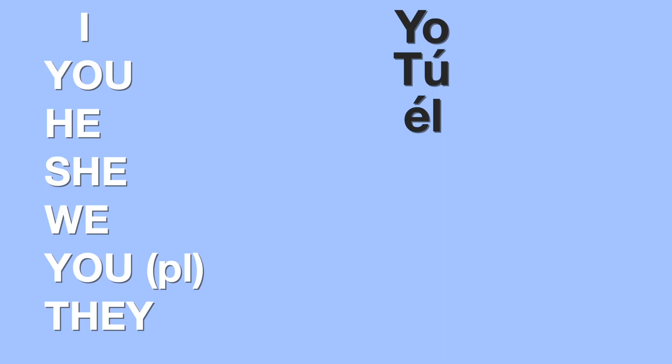In the previous video, we learned about the pronouns and how there are translations for each pronoun in English. Let's quickly review them. The word for I is yo. You — tú.